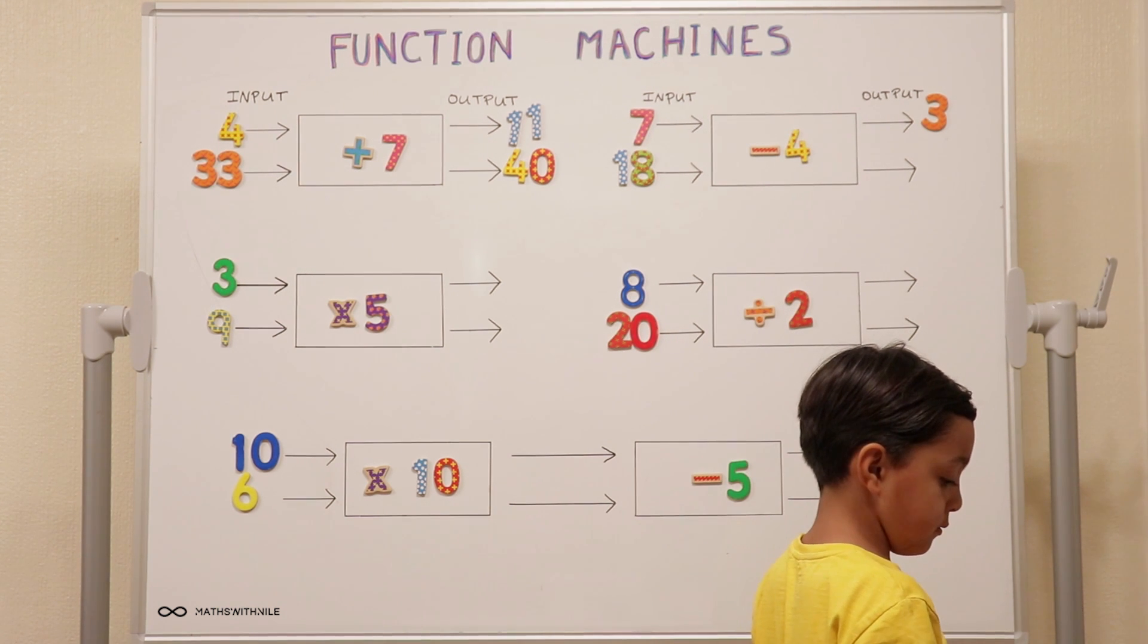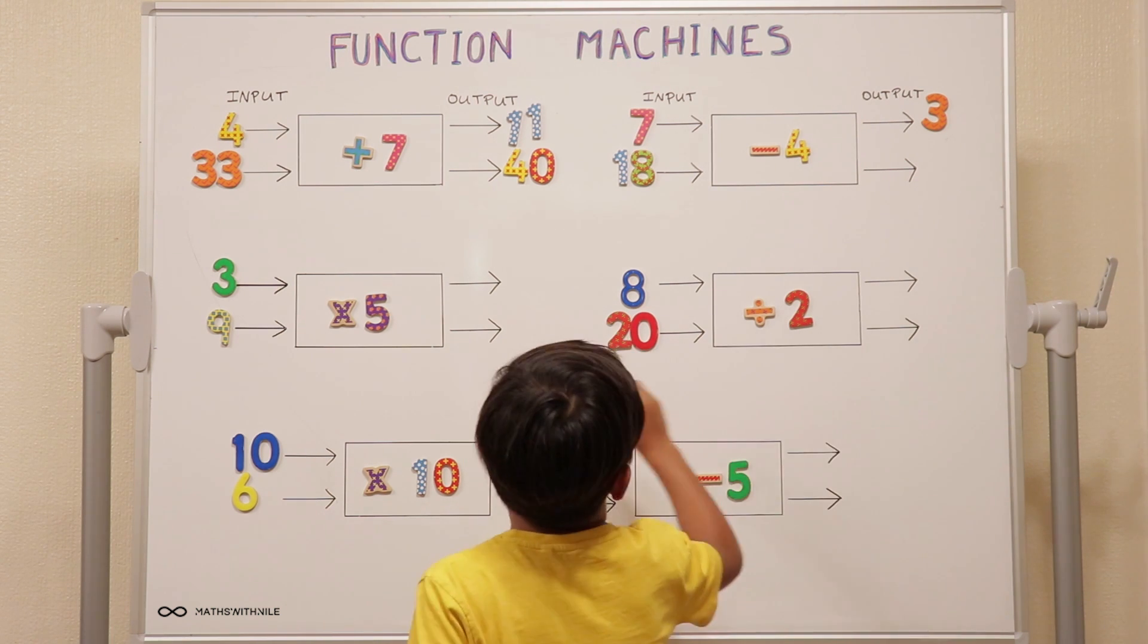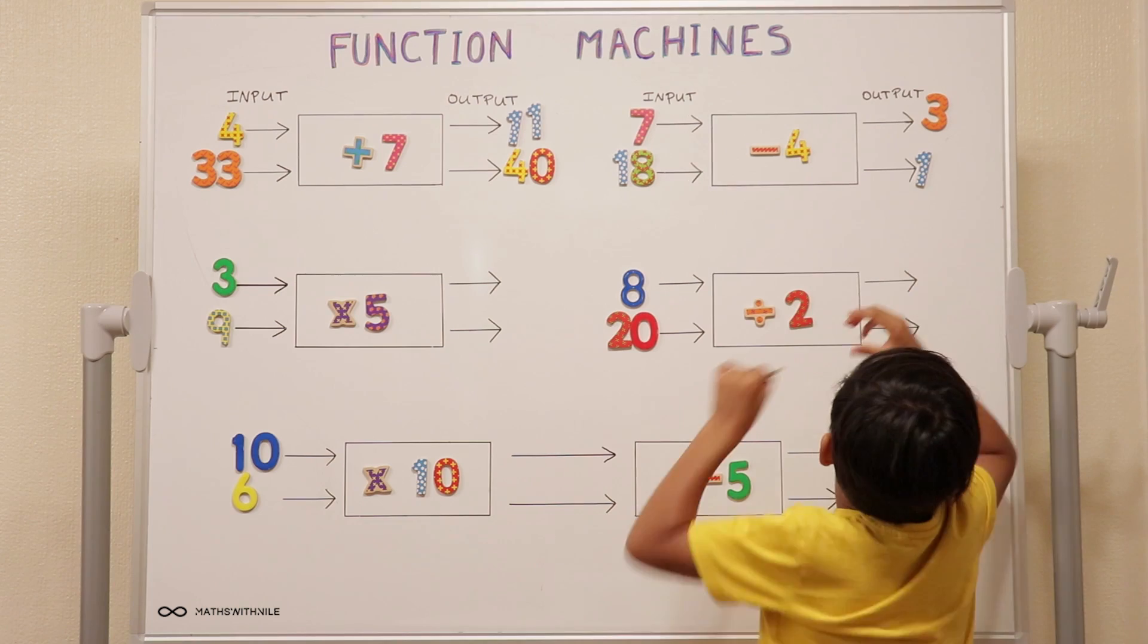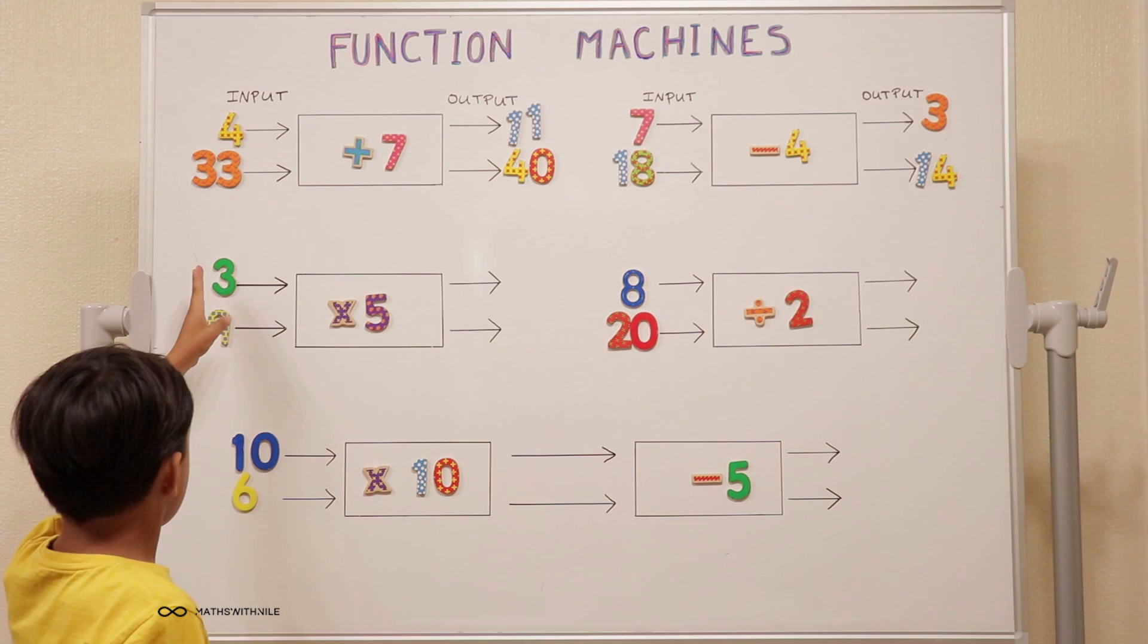What about the second one? Eighteen take away four equals fourteen. Very good, fourteen.